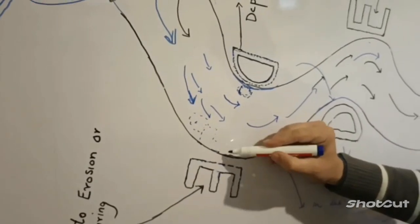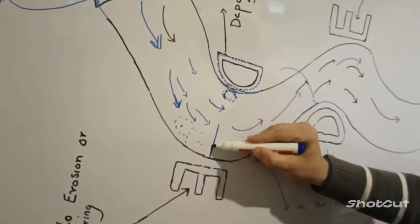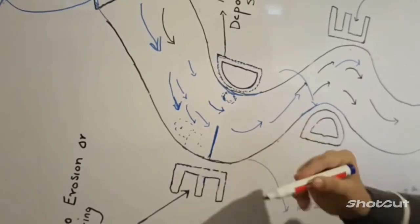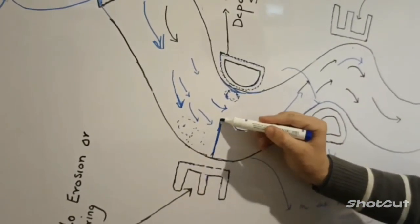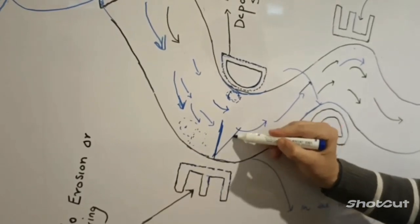And then accordingly when you will know where erosion is occurring, you will be in a position to decide which structure to build there. If erosion is occurring here, then which structure should you design there.